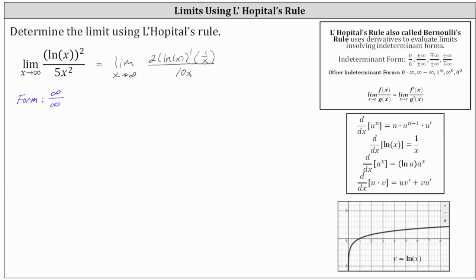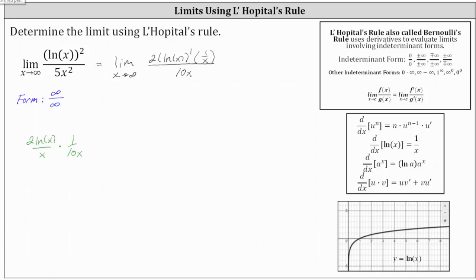Now let's make sure we simplify correctly. We can write the numerator as 2 natural log x divided by x, and then dividing by 10x is equivalent to multiplying by the reciprocal, 1 over 10x. Notice we can simplify the 2 and the 10 — there's one 2 in 2 and five 2s in 10 — which gives us the limit as x approaches infinity of natural log x divided by 5x squared.